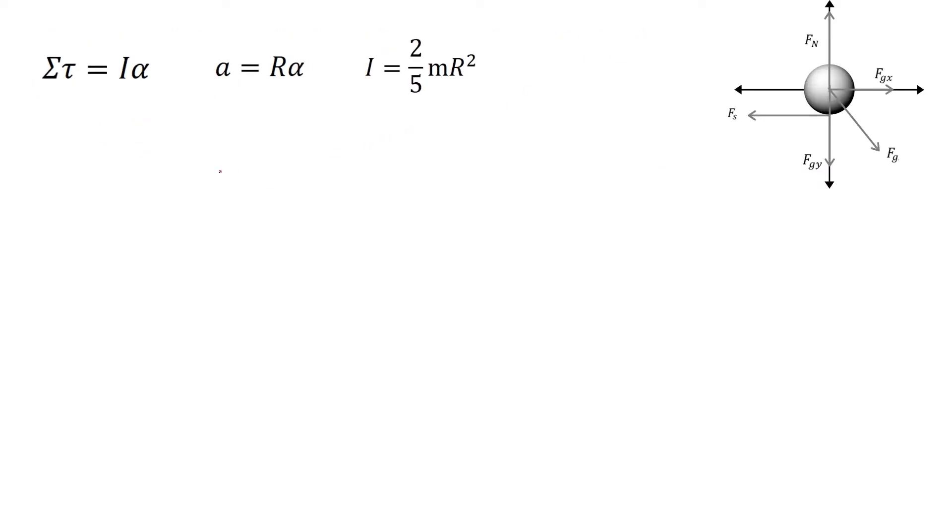For this problem, we will use the equation torque equals moment of inertia times alpha. With this, we have to substitute alpha with a different variable using its relationship with the linear acceleration. We arrive at this situation where the torque is only produced by the frictional force.